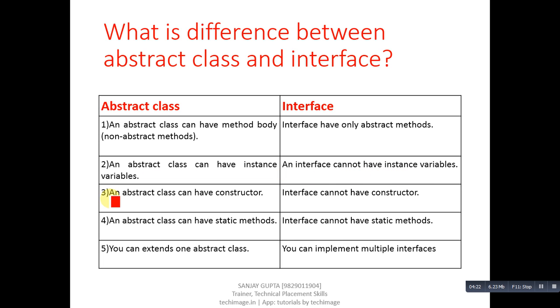Third point, an abstract class can have constructor, whereas interface cannot have constructor. Fourth point, you can extend one abstract class, whereas you can implement multiple interfaces.